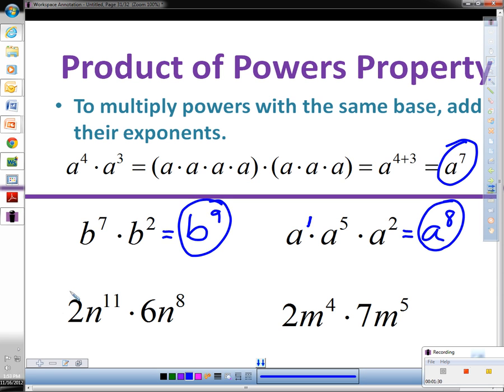When we throw in some other numbers, like in this example, we have two and six, which are just regular numbers. They don't have any exponents on them and it's a multiplying problem. So we multiply two times six equals twelve.